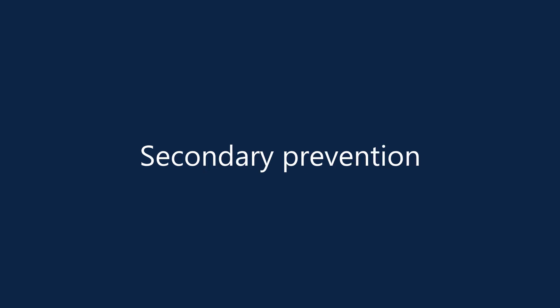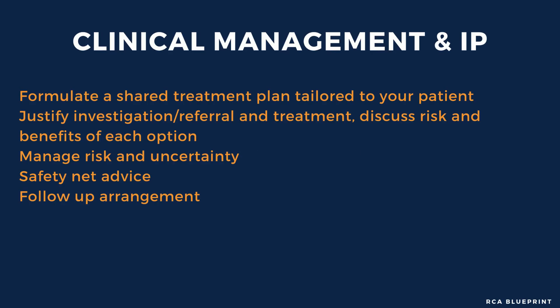It is worthwhile considering secondary prevention. For example, lifestyle advice: discuss smoking cessation, weight loss if the patient is obese or overweight, and eating a healthy diet. Consider starting the patient on lipid-lowering medications such as a statin. It's important to establish who is living with the patient so that when you make your clinical management plan, you can check whether a partner would be able to take them to the TIA clinic appointment, or identify who can support them if they live alone.